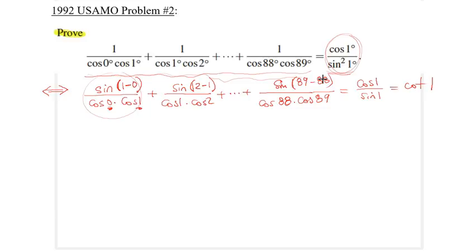Let me write our first claim. The claim is the following: sine(a minus b) divided by cosine a times cosine b. I claim this is equal to... let's just prove what it is.